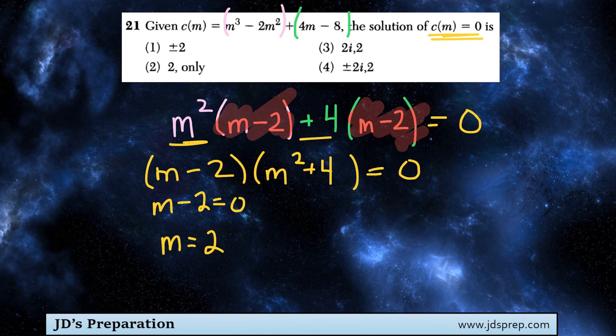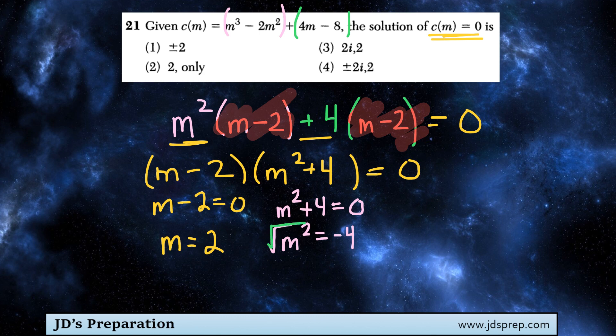And then if we set m squared plus 4 to be equal to 0, if we try to solve this, we'd get that m squared is equal to negative 4. And then to solve for m, we're going to square root both sides so that m is going to be equal to both the positive and negative version of the square root of negative 4.